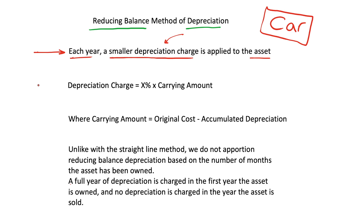To formalize this with a mathematical equation: the annual depreciation charge for the reducing balance method is x% multiplied by the carrying amount of the asset. The carrying amount is defined as the original cost of the asset minus any accumulated depreciation that we have on the asset.